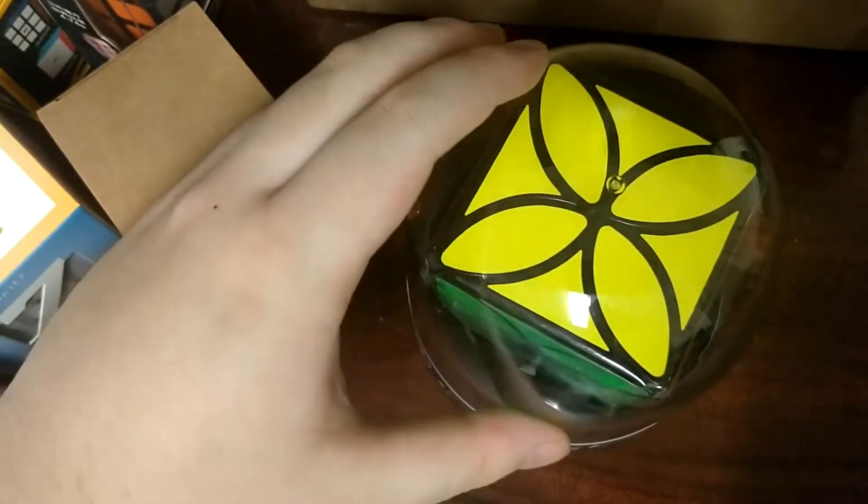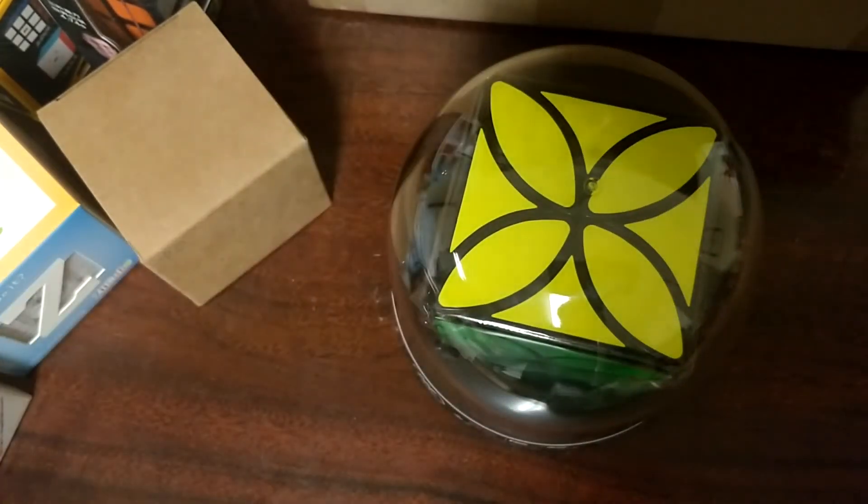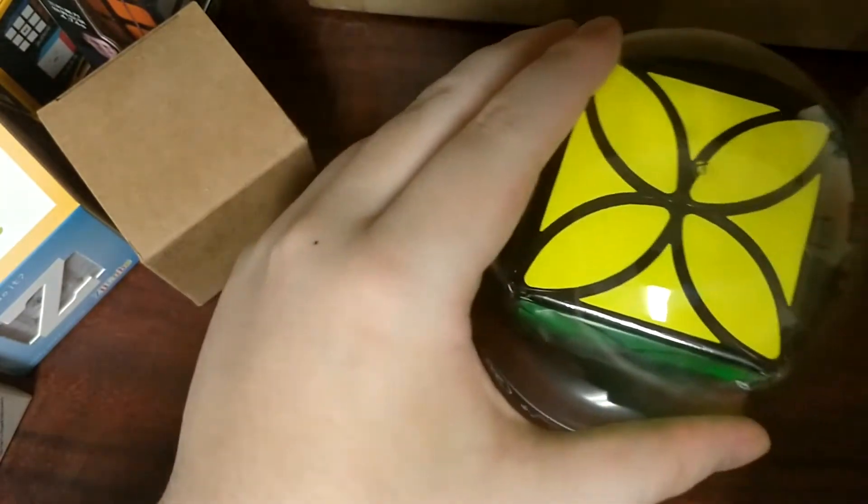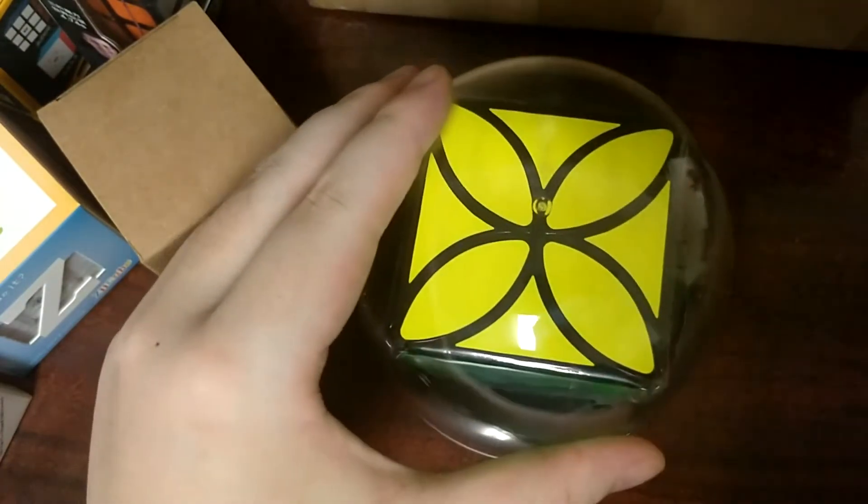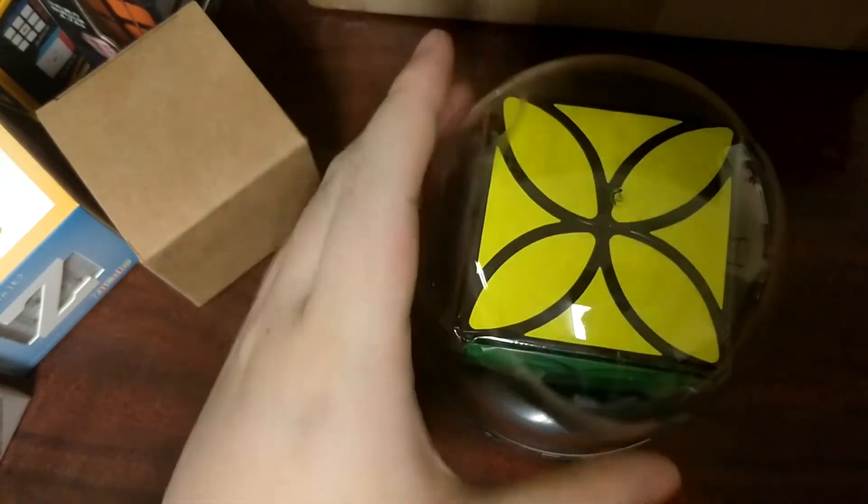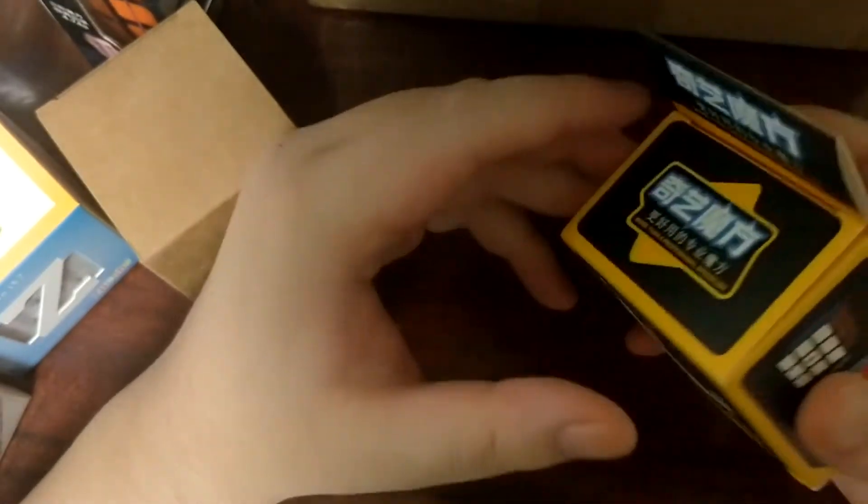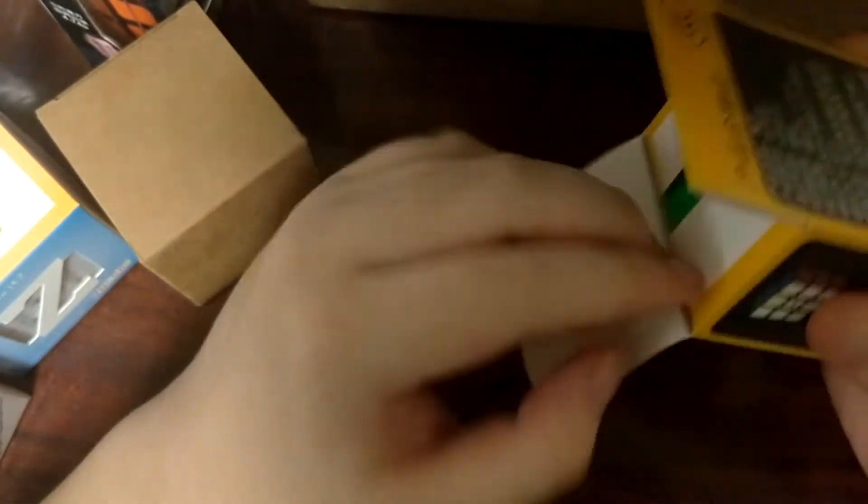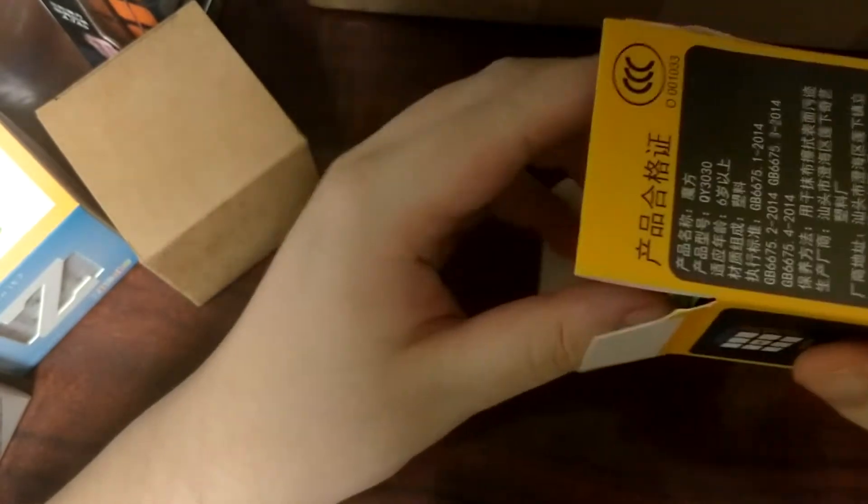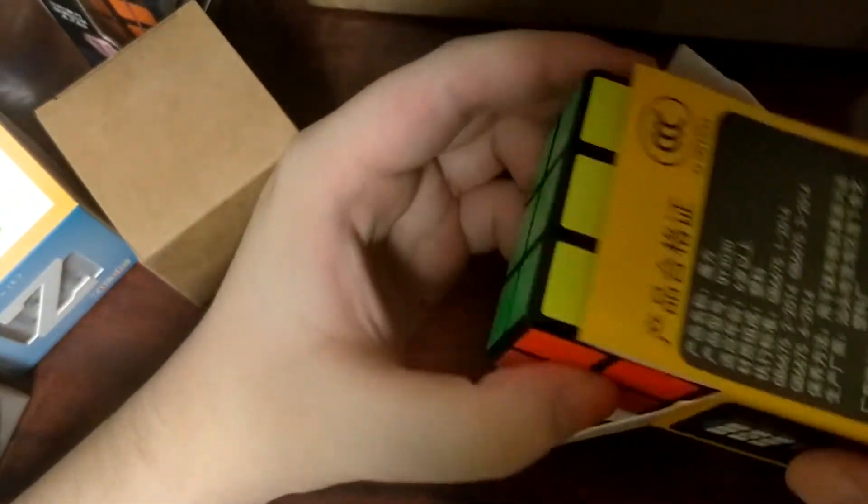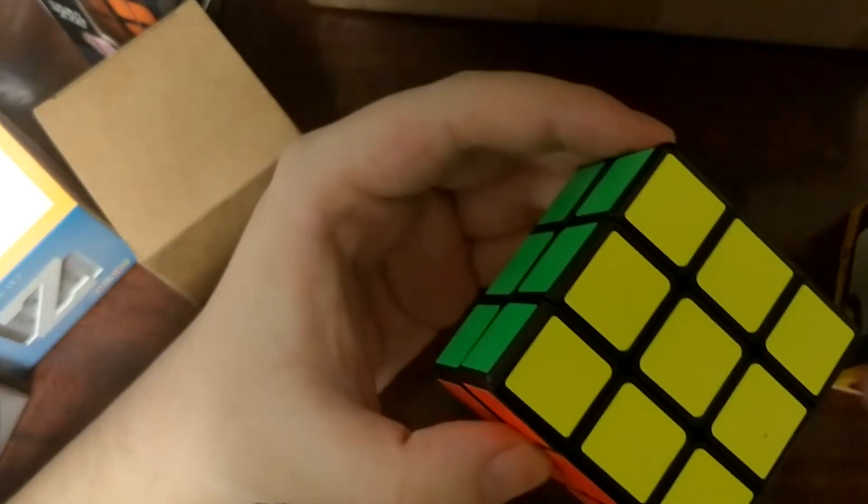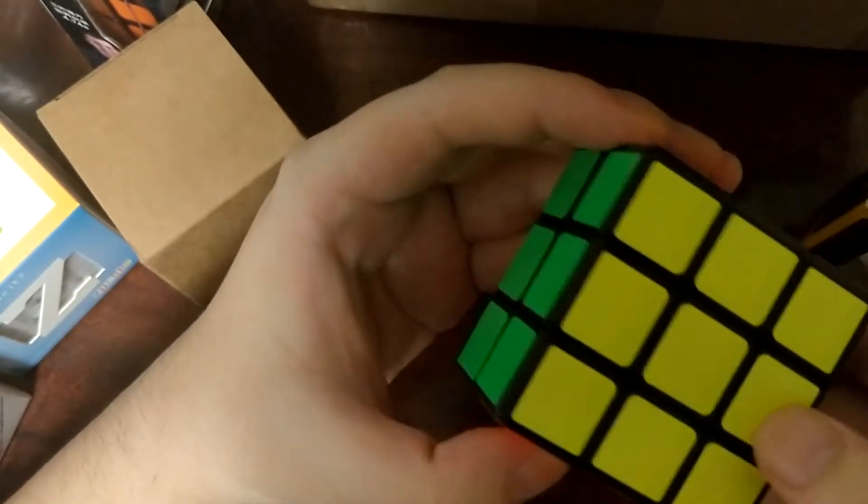Alright, so I'm gonna go through the puzzles in order. Maybe not in order. Okay, so let's start with the Chi 2x3x3. Now, I have a 2x2x3. So this is similar except it's a 2x3x3.